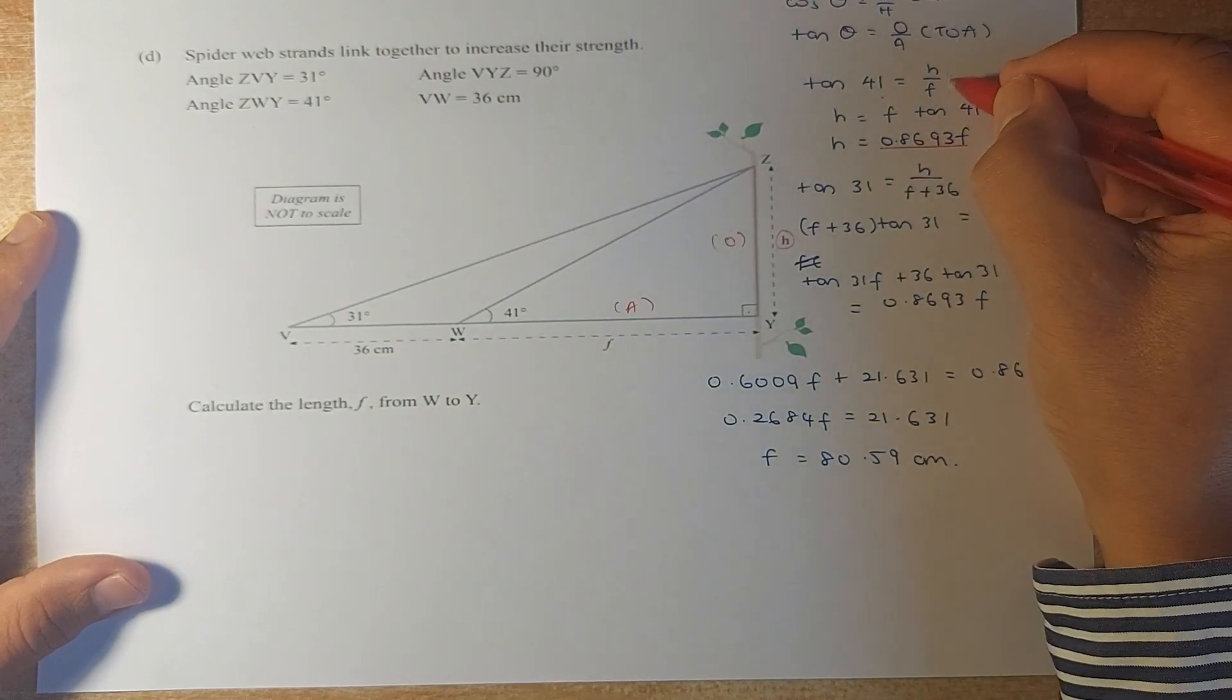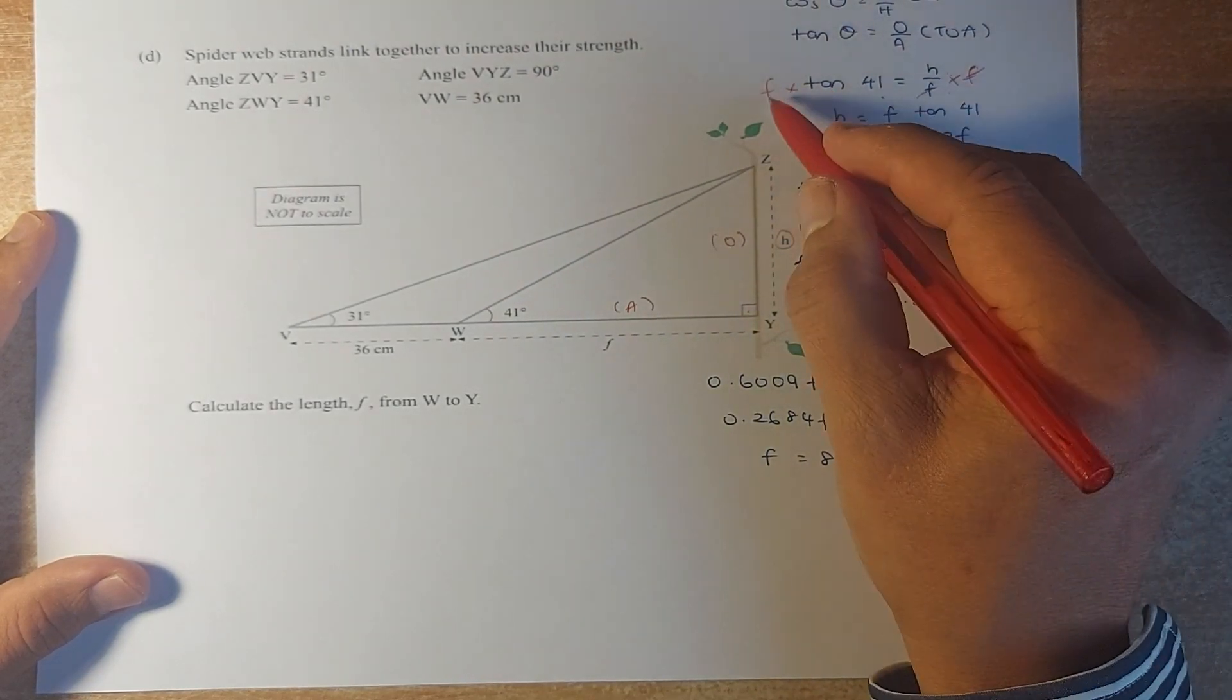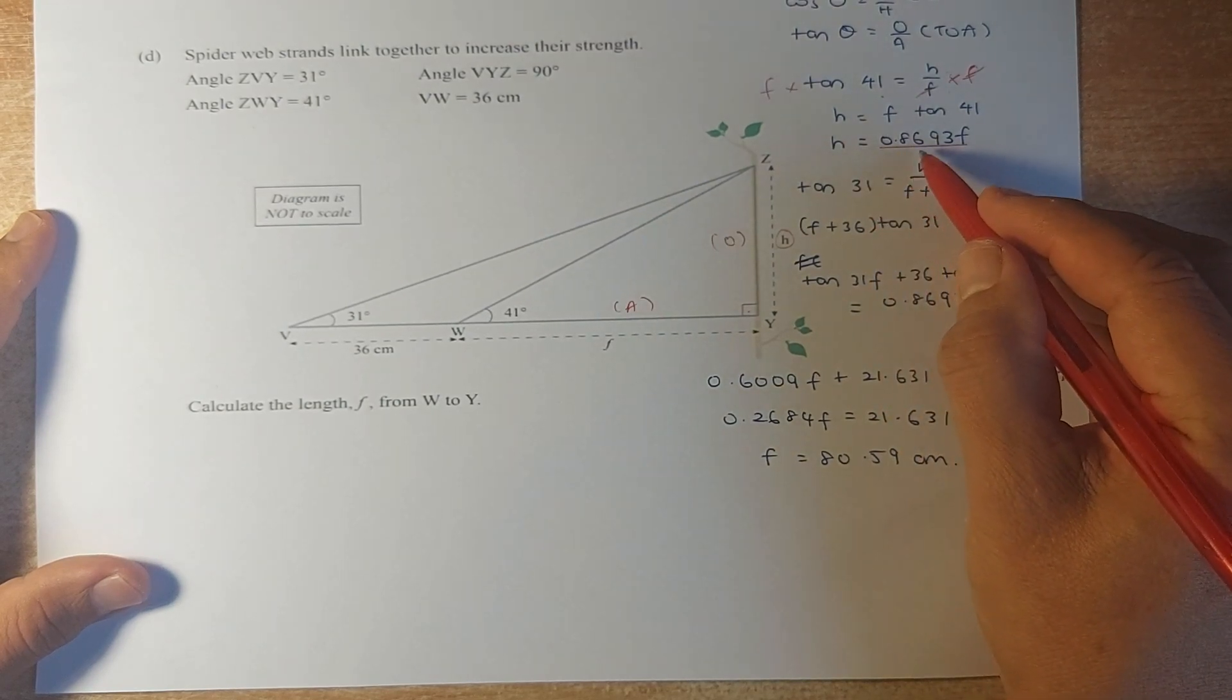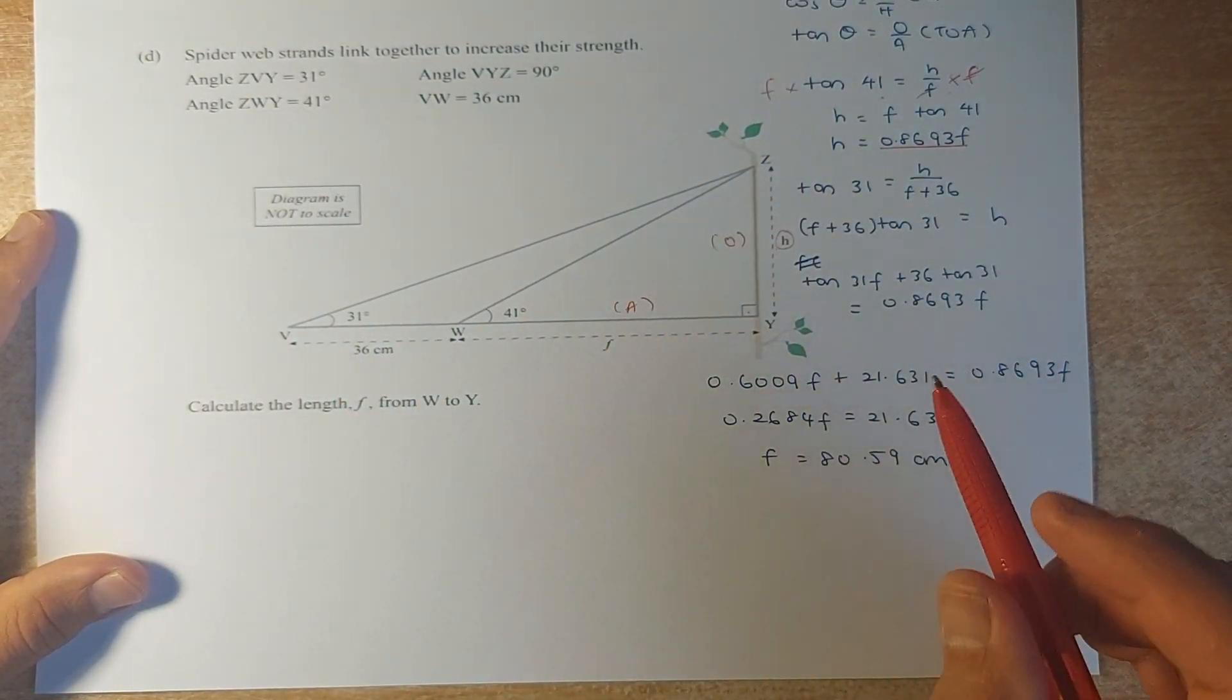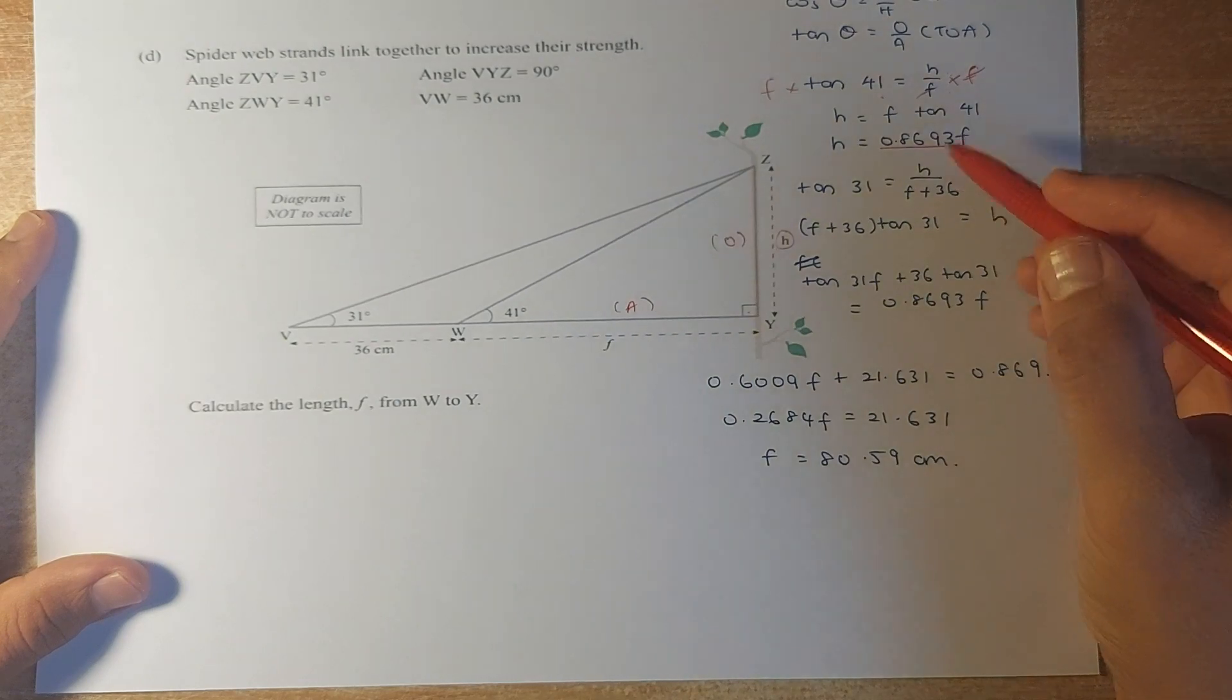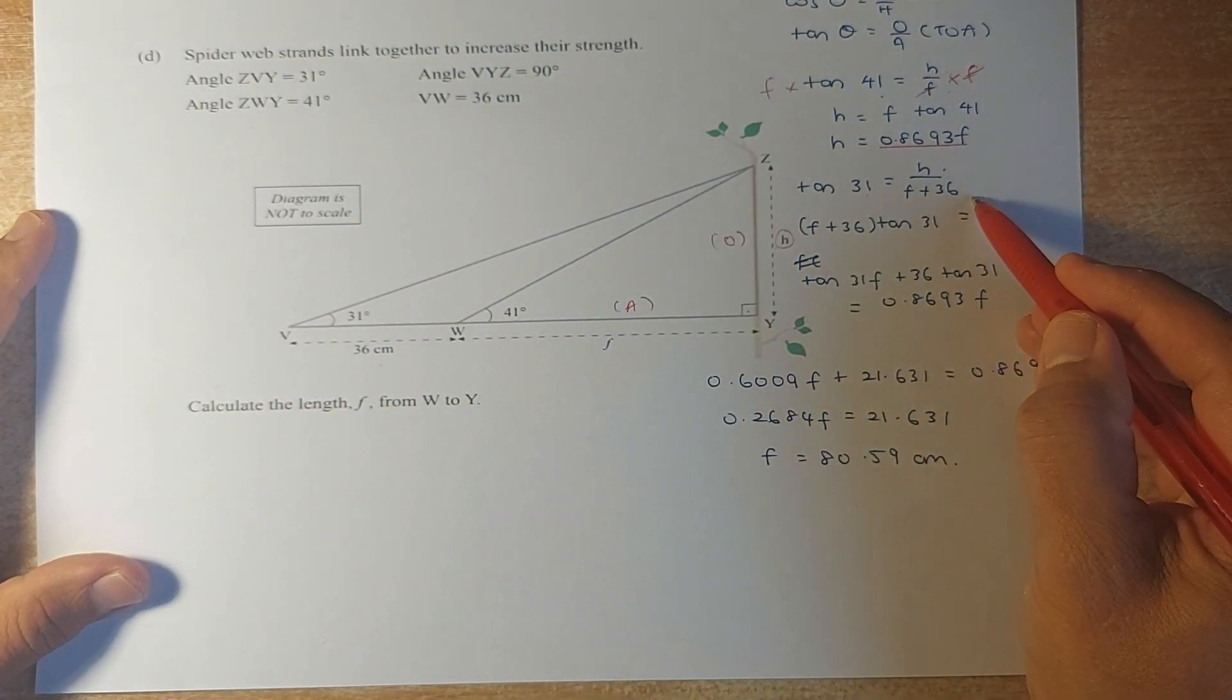Put in your calculator. Tangent 41 is 0.8693. So H equals 0.8693F. Now we look at the second triangle. Tangent 31 is again opposite over adjacent. This time, your opposite is H still. Your angle is 31 and your adjacent now is 36 plus F.